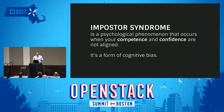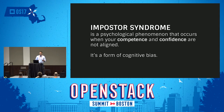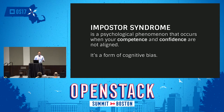Wikipedia calls imposter syndrome a psychological phenomenon that occurs when your competence and confidence are not aligned. If you tear the word 'phenomenon' apart, it means you can see something happening, you know it's happening, but you have no idea why. A good example: the first time astronauts lit a match in space, it had a strange blue semicircle over the top. They could see it and photograph it but had no clue why.